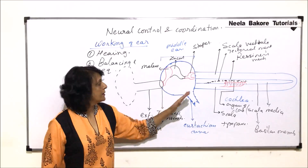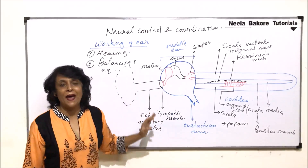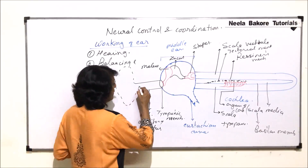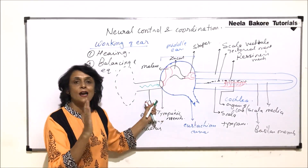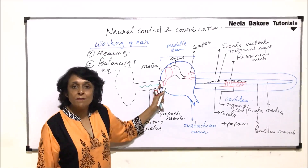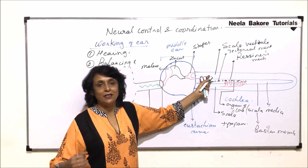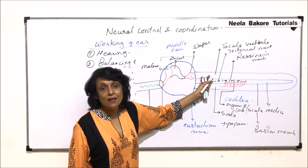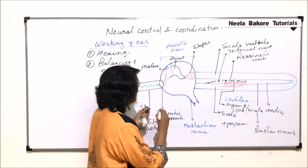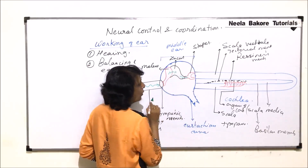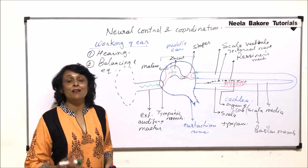When sound waves fall on the tympanic membrane, the membrane starts to vibrate. These vibrations are passed on through the ear ossicles and finally come into the cochlear part. The upper compartment is filled with perilymph, the lower compartment also with perilymph, and the middle compartment with endolymph. The vibrations travel from bone to bone and then into the liquid, and the middle ear actually amplifies the sound wave.